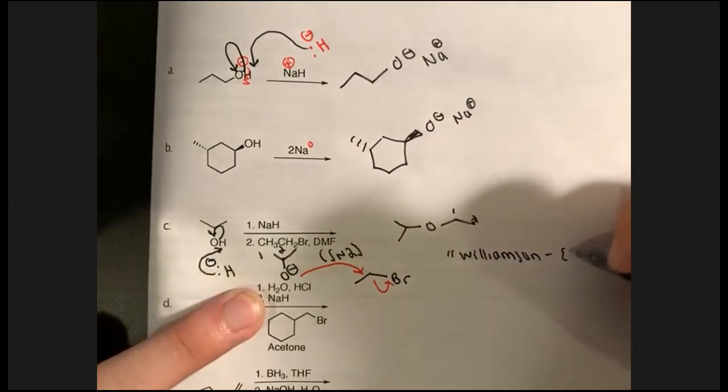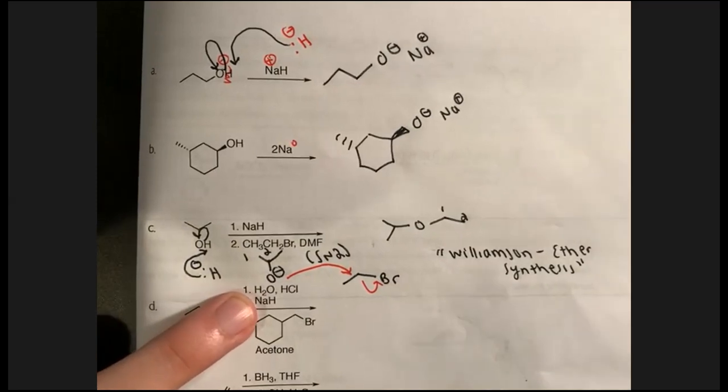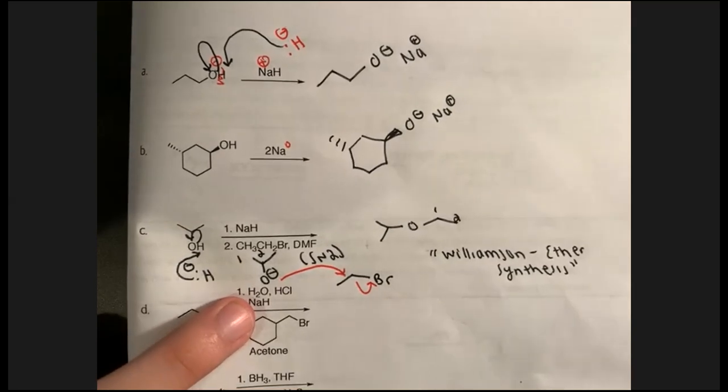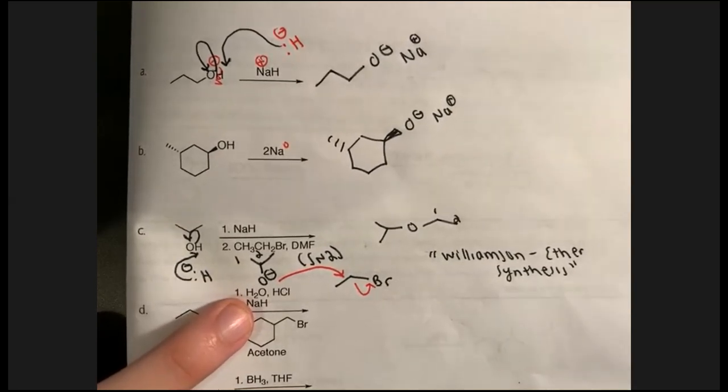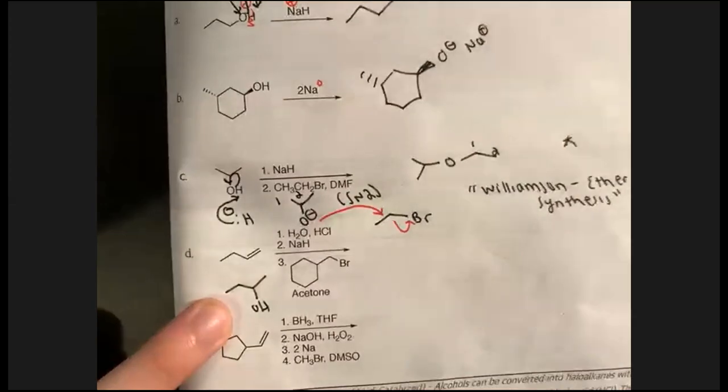That specific reaction in C is called Williamson Ether Synthesis. It's not super important that you know the name, but when you go to Orgo Lab — and I actually work in the Orgo Lab — Williamson Ether Synthesis is an actual lab experiment you'll do with reflux condensers. Letter D: step one is acid-catalyzed hydration of an alkene, giving Markovnikov addition for an alcohol. Step two is sodium hydride deprotonating, then step three is another SN2 reaction.